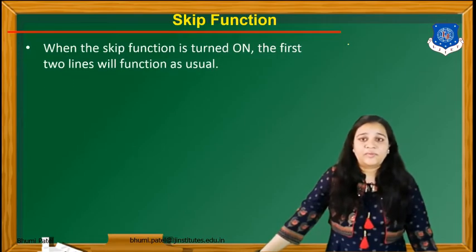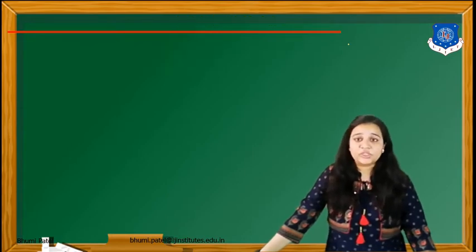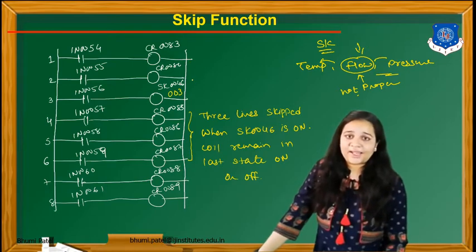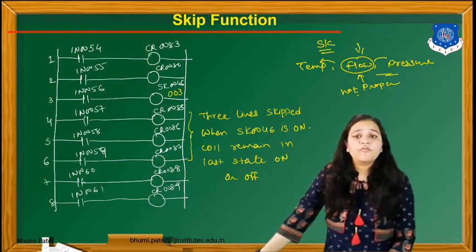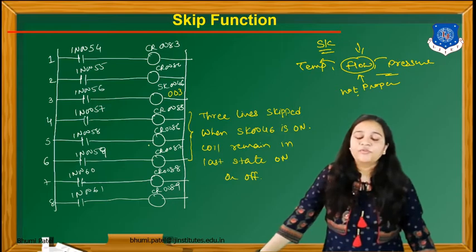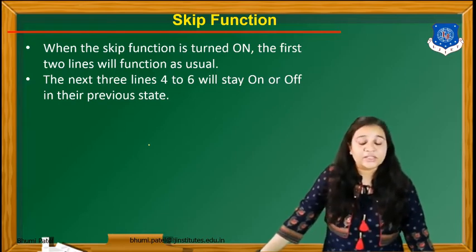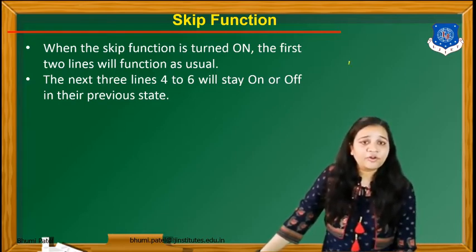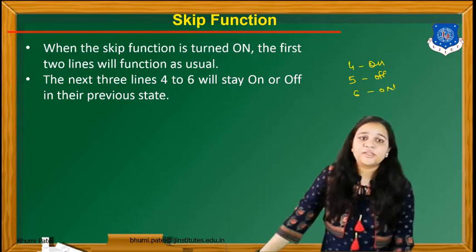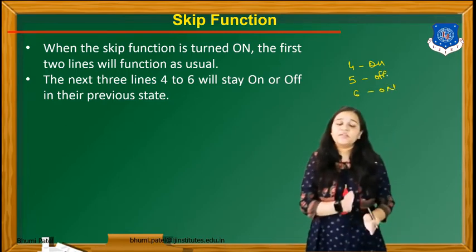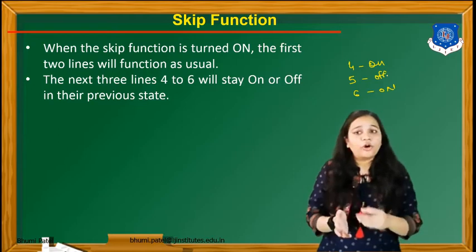When the skip function is turned on, the first two lines are executed as usual. In our program, these two lines execute normally. Whenever the third rung contains the skip function, rung numbers 4, 5, and 6 will be skipped. The next three lines — 4 to 6 — will stay on or off in their previous state. Suppose line 4 was on, line 5 was off, and line 6 was on before the skip function was applied — they will remain in those states while skipping.